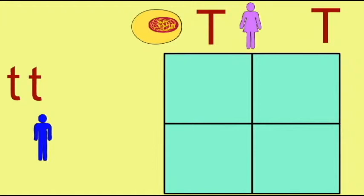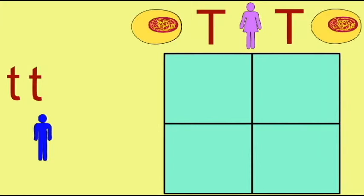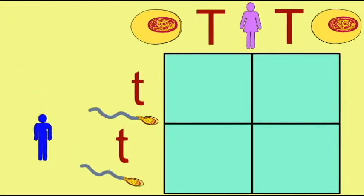In a Punnett square, each gamete is haploid, and so if the alleles are represented by capital and lowercase letters, only one of the two alleles would be depicted in each box.